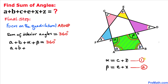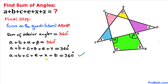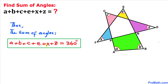Substituting, we replace alpha with c + z and beta with e + x, giving us: a + b + c + z + e + x = 360°. Rearranging, we get: a + b + c + e + x + z = 360 degrees. So the sum of all these angles a, b, c, e, x, and z turns out to be 360 degrees. Thanks for watching and please don't forget to subscribe to my channel for more exciting videos!